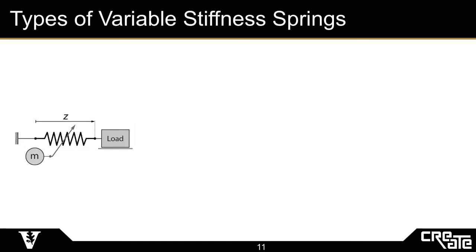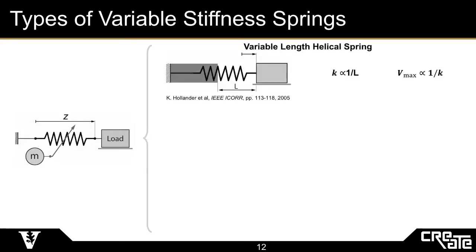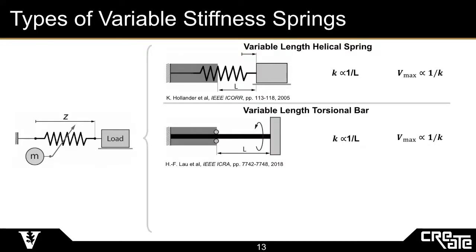A general model is shown on the left, and from this model, a couple of implementations can be examined to assess this particular behavior. First is a variable length helical spring. As the number of active coils of this helical spring decrease, the stiffness increases. However, doing so reduces the available deformation that this helical spring can achieve, thus reducing the energy storage capacity. Next is a variable length torsional bar. Similar to the helical spring example, the stiffness of this torsional bar increases as the active length decreases, and the resulting energy storage capacity scales inversely.